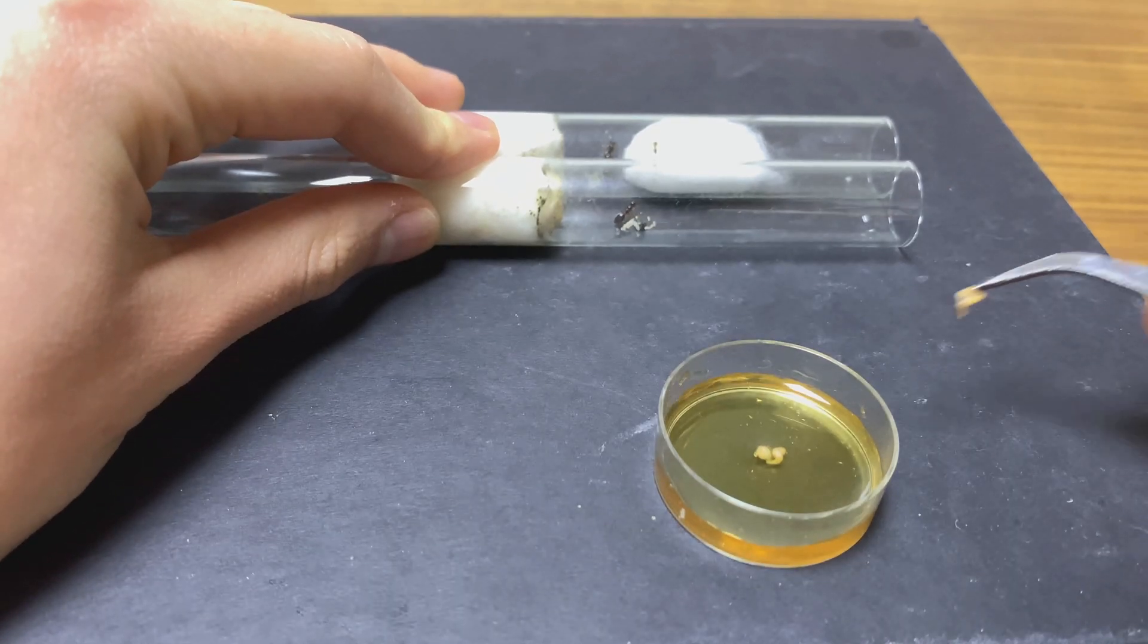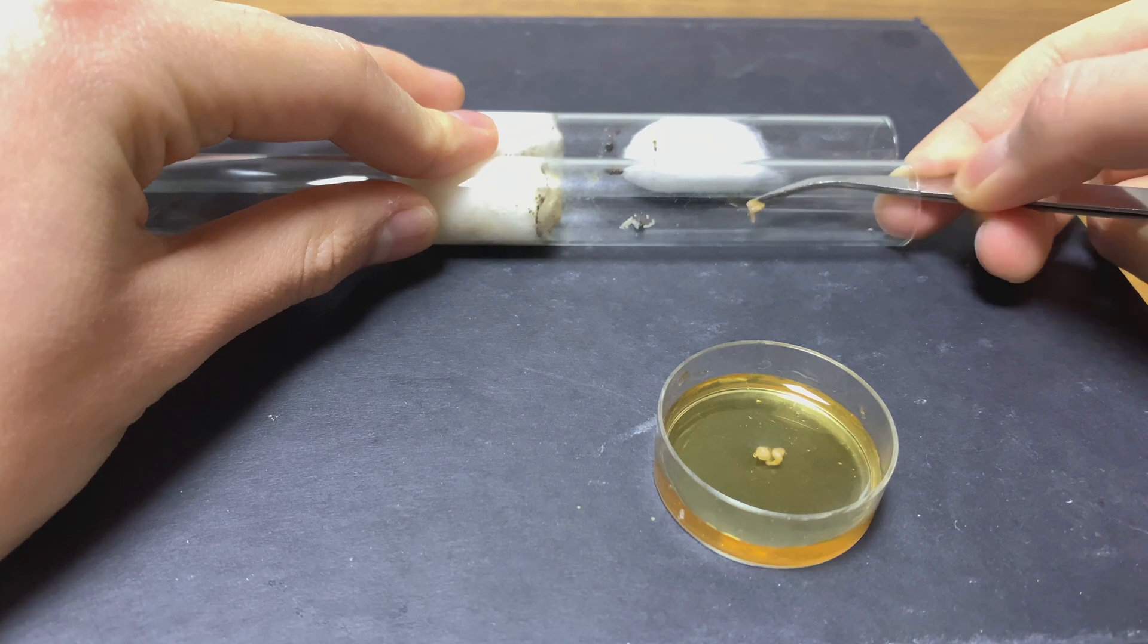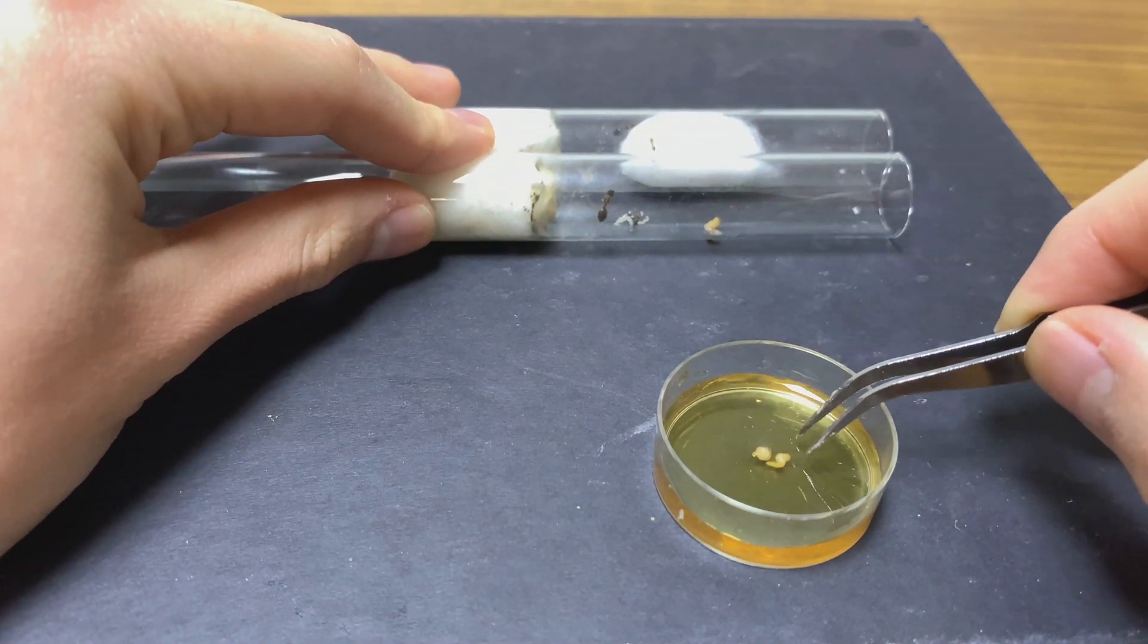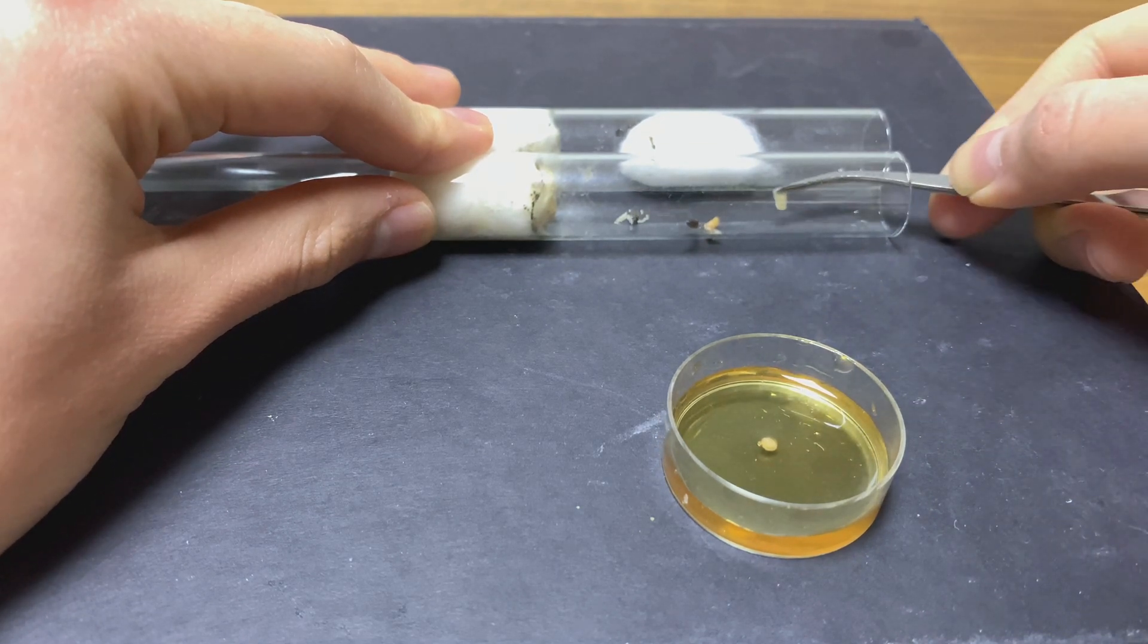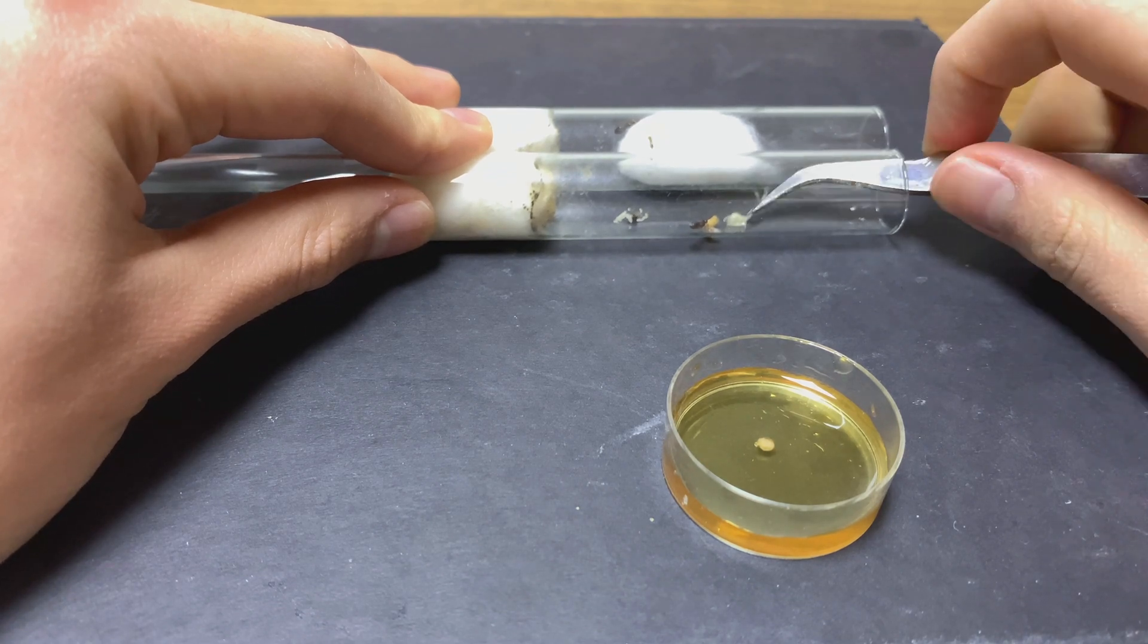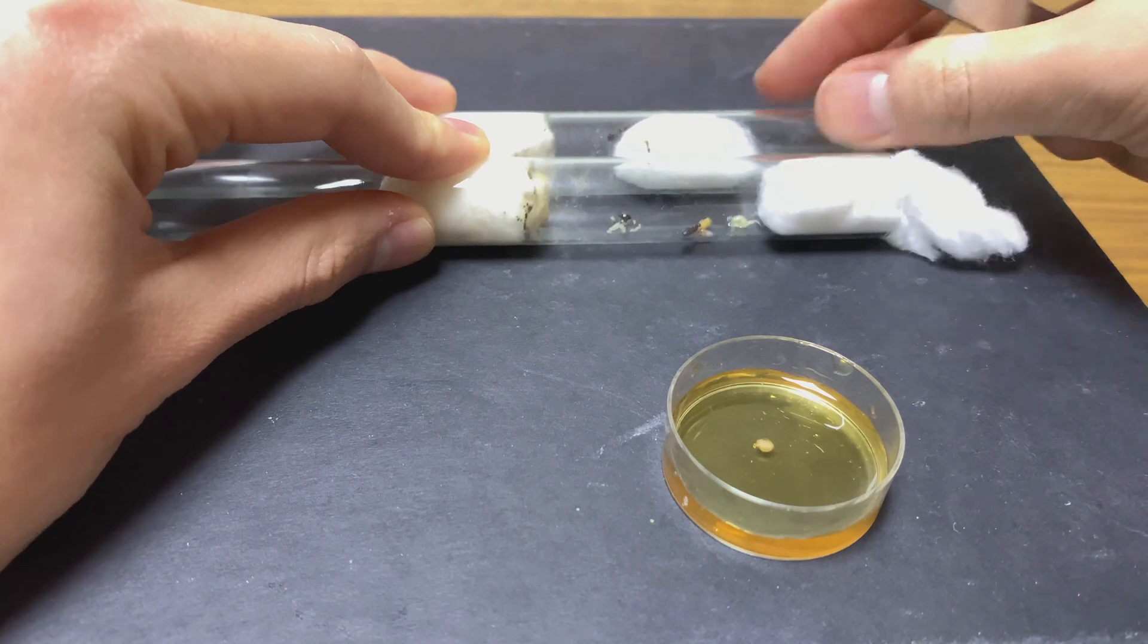First, I'll put in this cut-up mealworm. Very gently, like that. You don't want to put these very close to your hands because it might get moldy and that's not good.